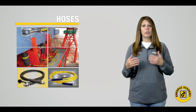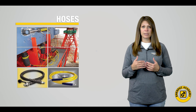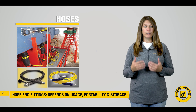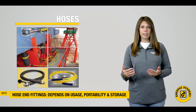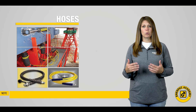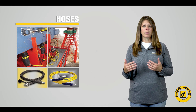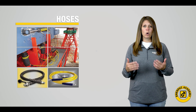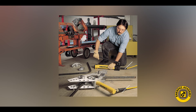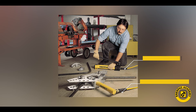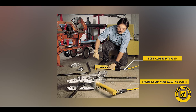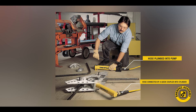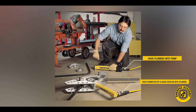Lastly, the hose end fittings must be selected. This will depend greatly on the use, required portability, and potential storage requirements. For many benchtop systems, the hose may be plumbed directly into the pump or gauge on one end, with a quick coupler to attach to a cylinder or tool on the opposite end.